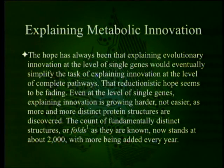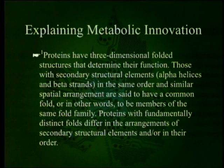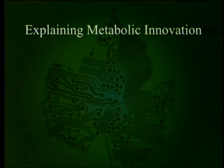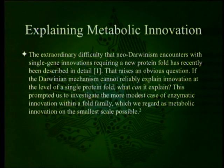Even at the level of single genes, explaining innovation is growing harder, not easier, as more and more distinct protein structures are discovered. The count of fundamentally distinct structures — or folds as they are known — now stands at about 2,000, with more being added every year. Proteins have three-dimensional folded structures that determine their function. Those with secondary structural elements — alpha helices and beta strands — in the same order and similar spatial arrangements are said to have a common fold, or to be members of the same fold family. Proteins with fundamentally distinct folds differ in the arrangements of secondary structural elements. The extraordinary difficulty that Neo-Darwinism encounters with single gene innovations requiring a new protein fold has recently been described in detail.